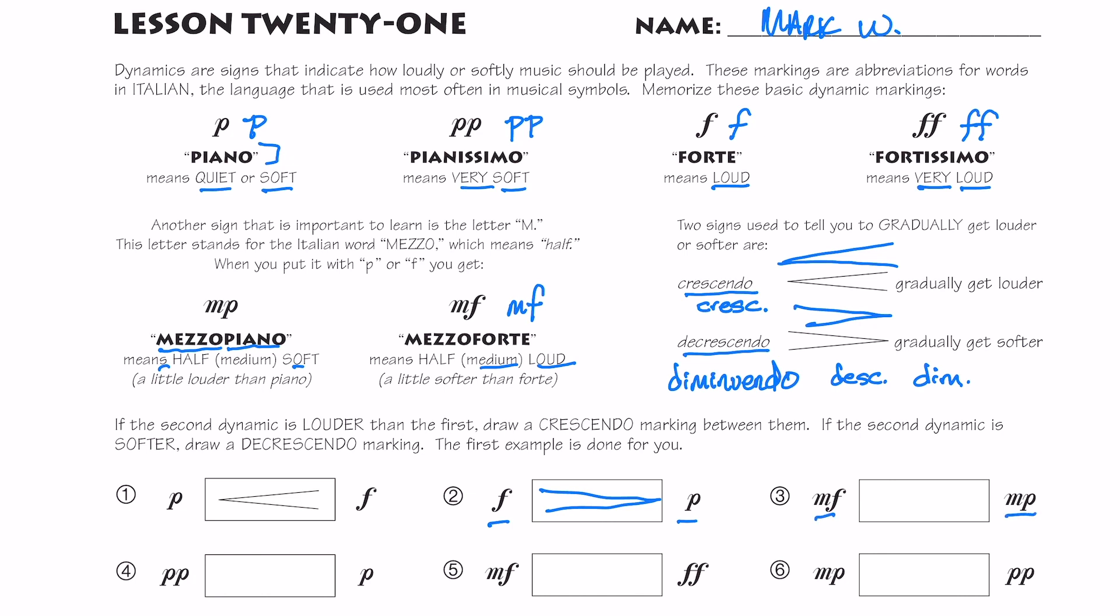Mezzo forte to mezzo piano, so medium loud to medium soft, I'm doing my diminuendo again. Pianissimo to piano, I'm gradually getting louder, not much louder, but a little louder. And then mezzo forte, medium loud to fortissimo, obviously getting from mezzo medium loud to very, very loud. And then finally, mezzo piano to pianissimo, I'm getting softer.